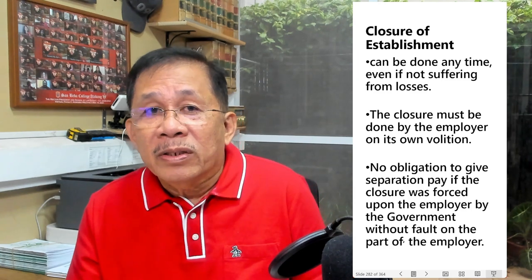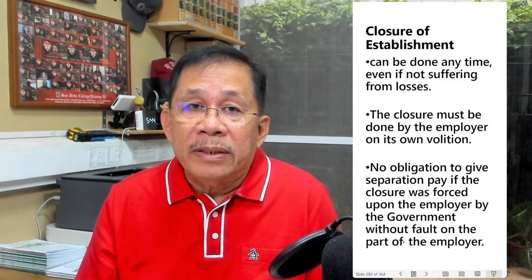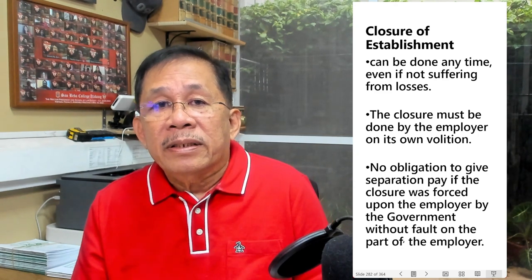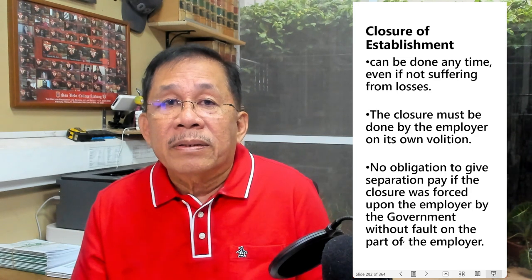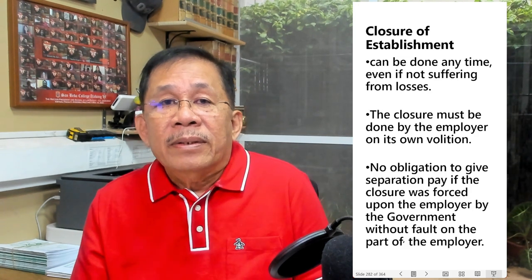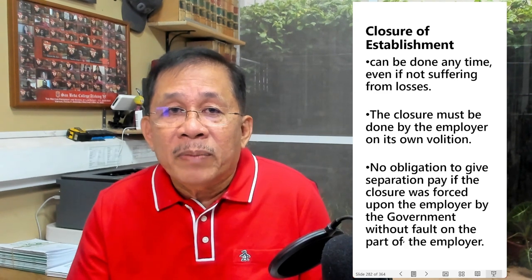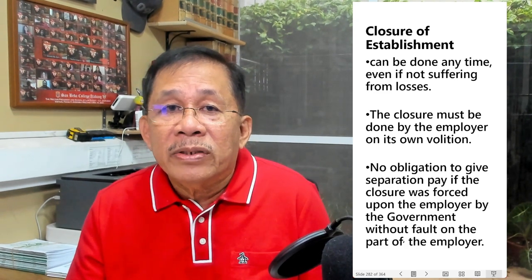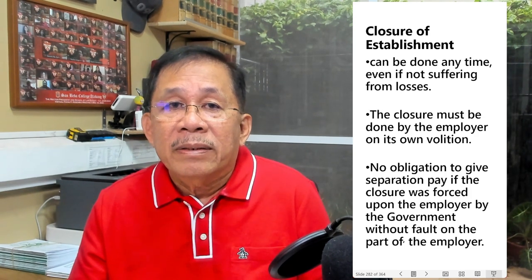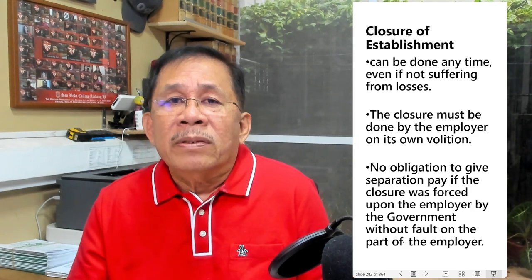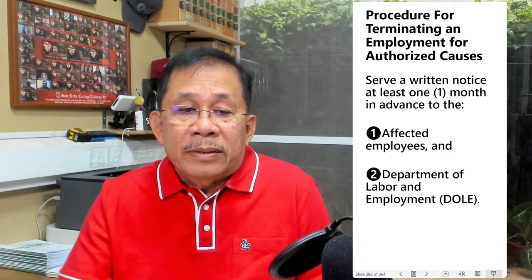The issue was whether the Court of Appeals was correct in holding that the matter involves retrenchment. The Supreme Court ruled that the Court of Appeals was not correct — the case is not retrenchment, but closure of business or undertaking. When Alabang Country Club decided to cease operating its food and beverage department and open it to a concessionaire, it did not merely reduce the number of personnel; it terminated all personnel assigned to that department.